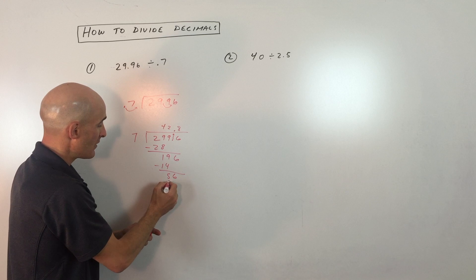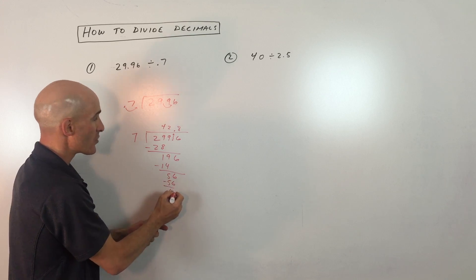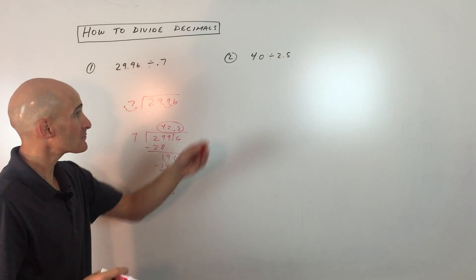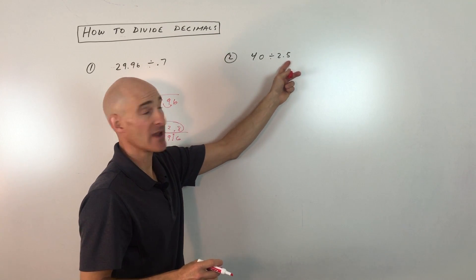Notice how everything's lined up. That's 56, zero remainder. So 42.8 is our final answer. Let's look at another example. Here we have 40 divided by 2.5.